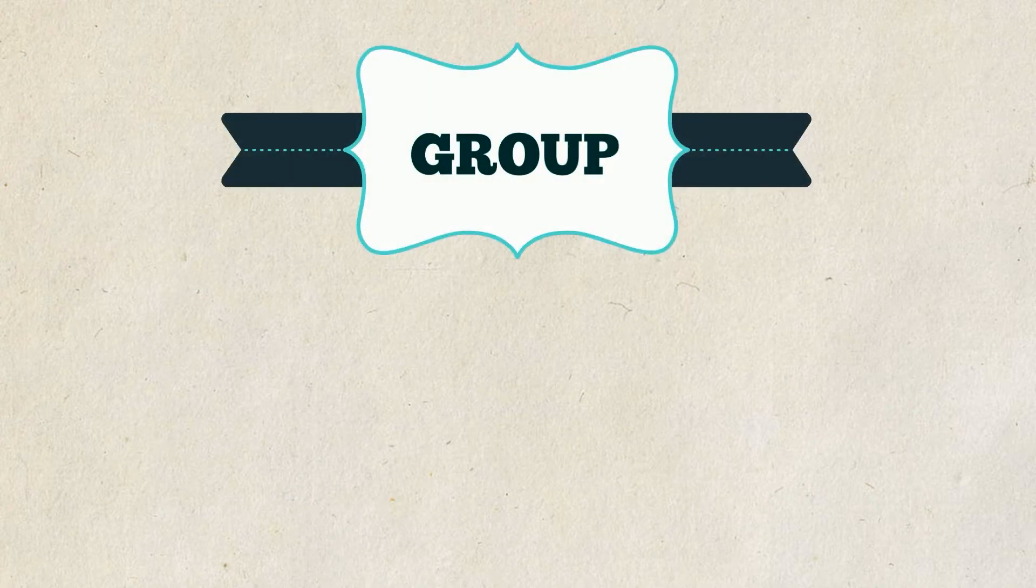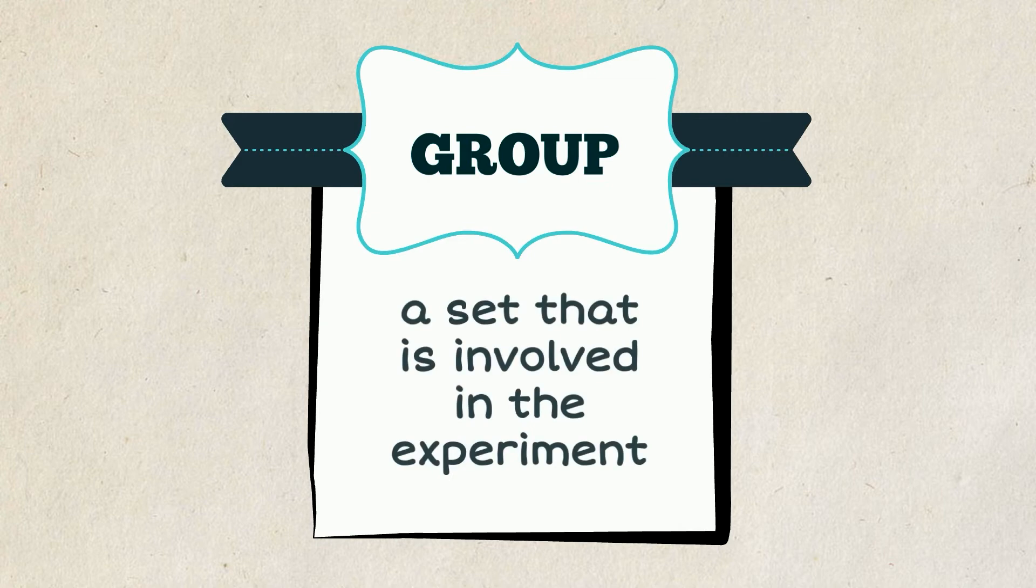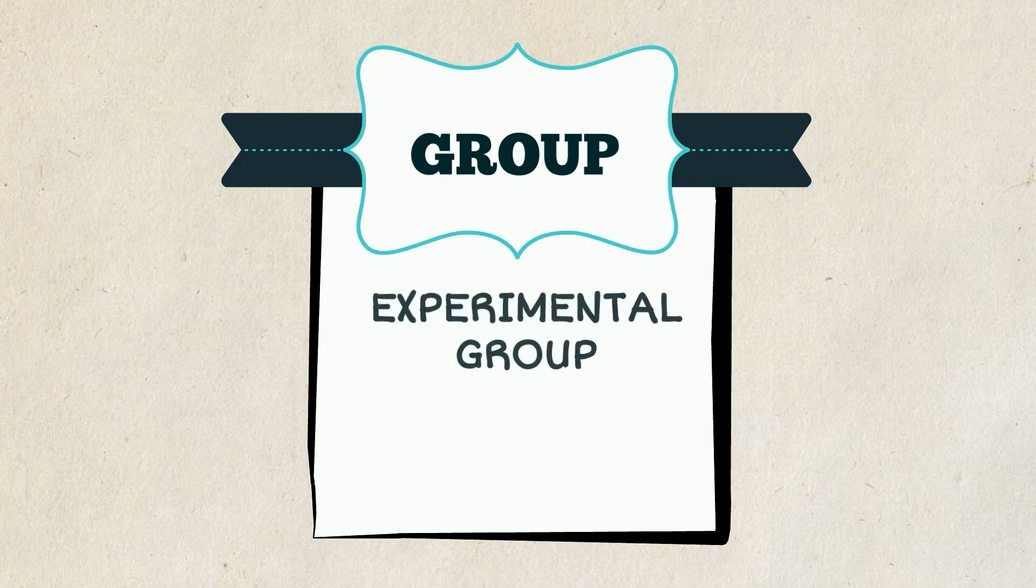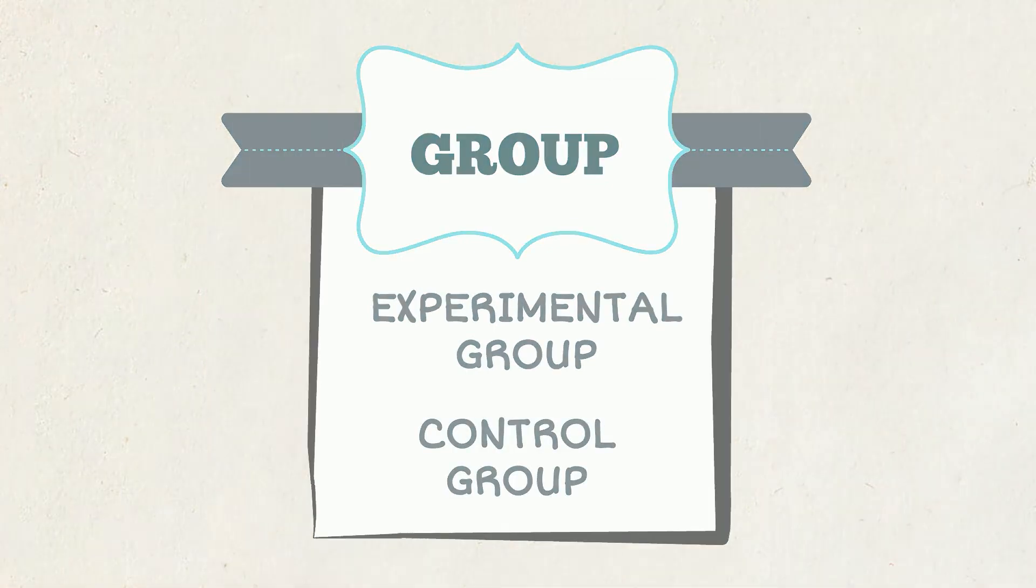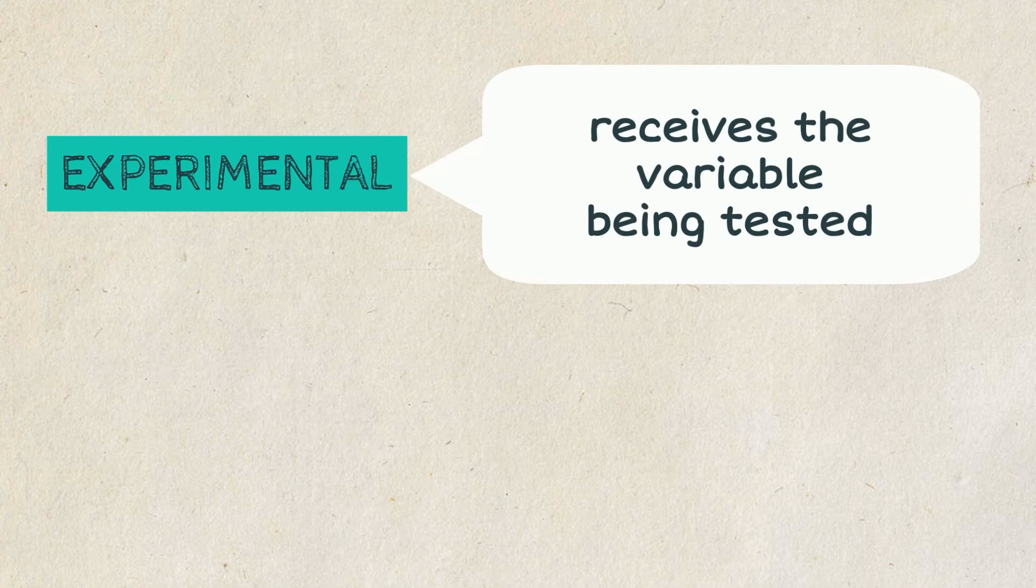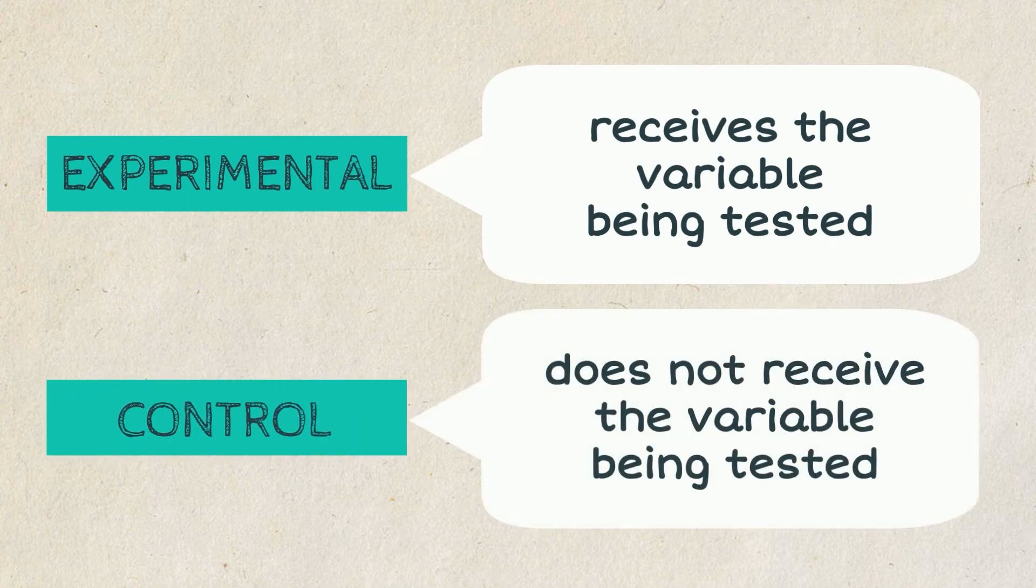The groups should be considered in designing an experiment. A group is a set that is involved in the experiment. We often have two groups, the experimental group and the control group. An experimental group is the one that receives the variable being tested in the experiment, while the control group does not receive the variable that you are testing.